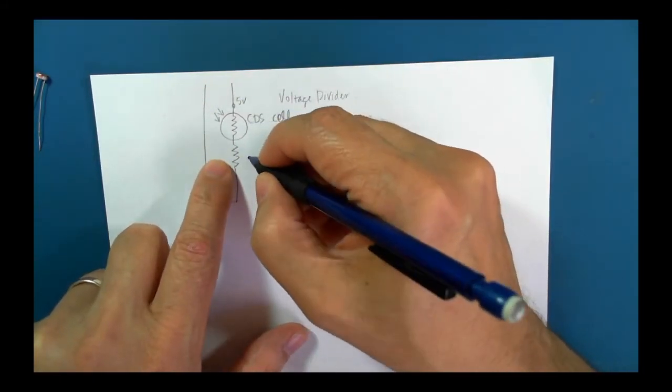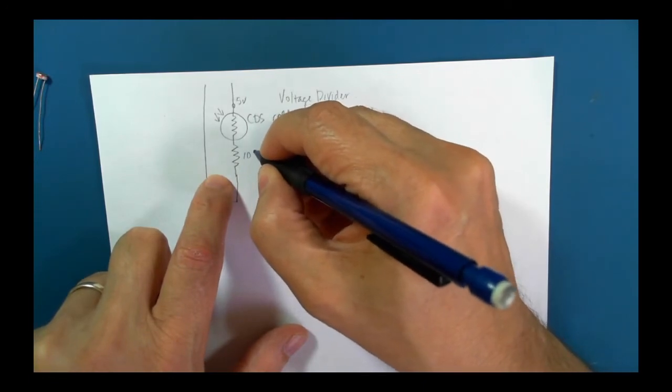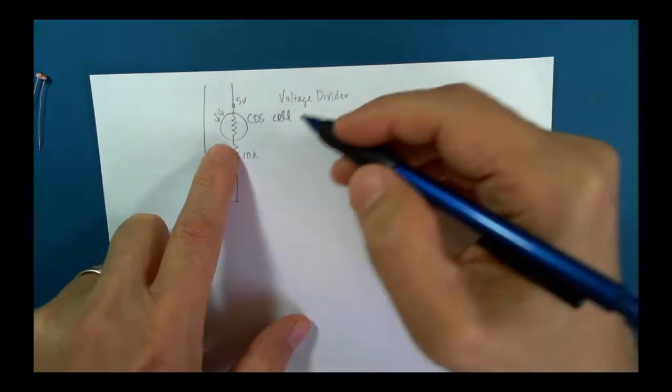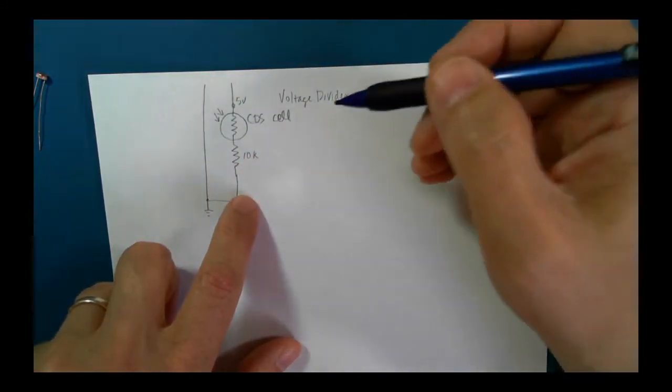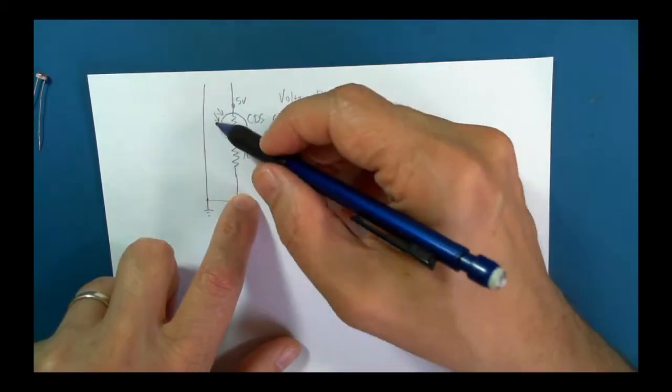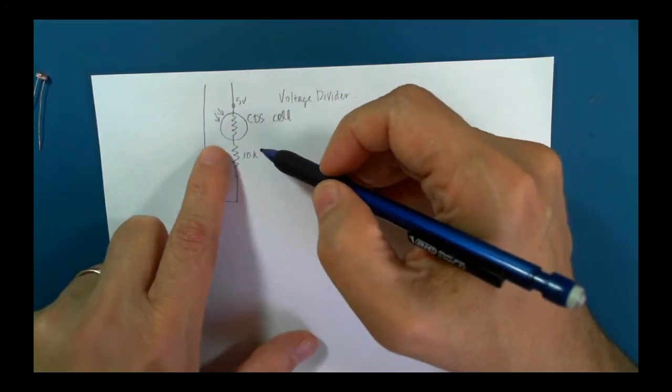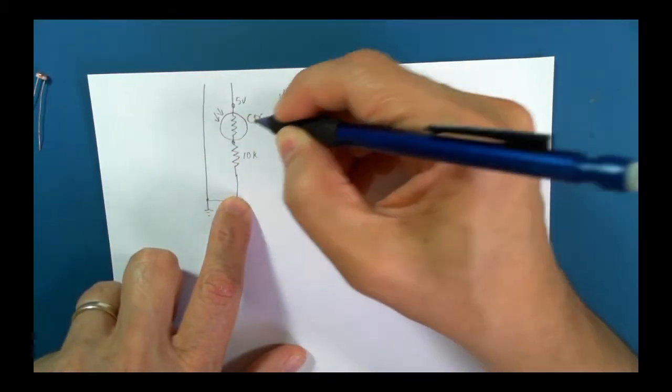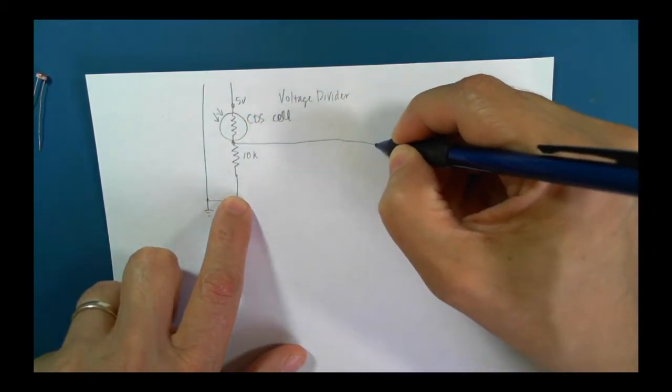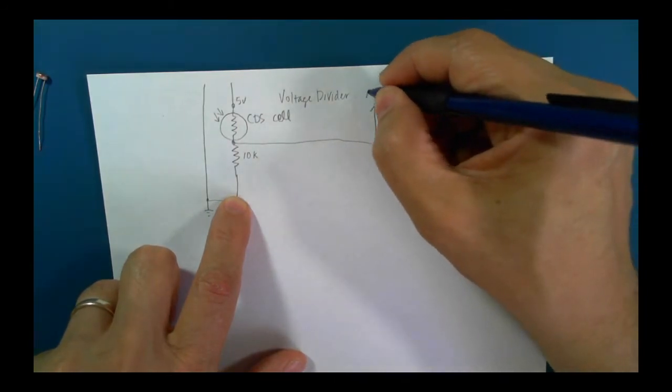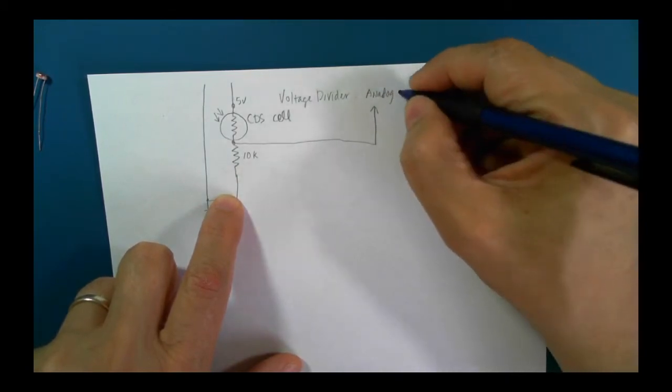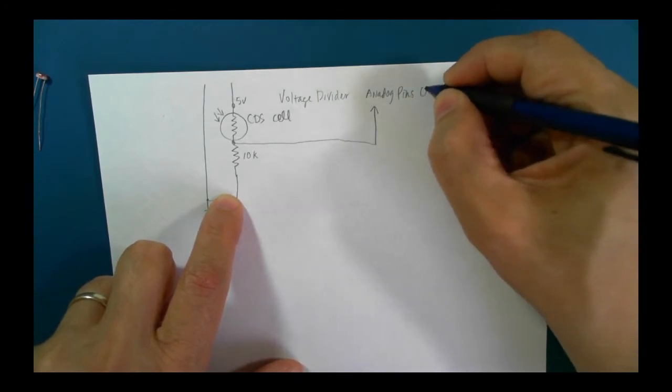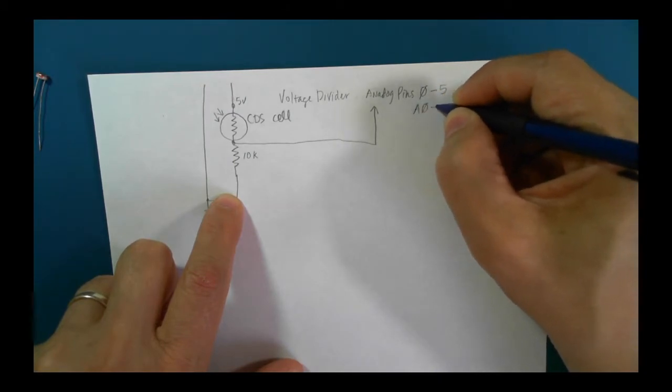And it accepts light and it changes its resistance based on the amount of light that's available. Our second resistor is the divider. And it's usually, in this case, for this type of cell, it's a 10K resistor. This will give us a good range of values between very bright light and darkness. And then from this center point, you then go back to one of the analog pins, either 0 to 5, or A0 to A5.